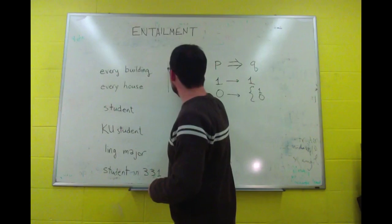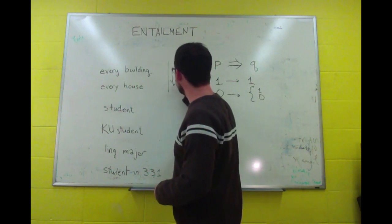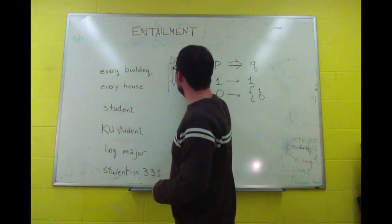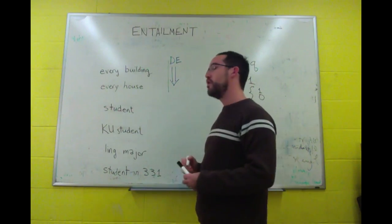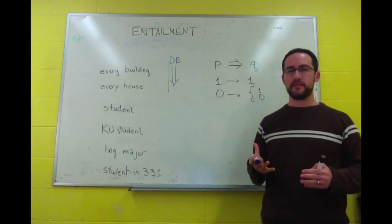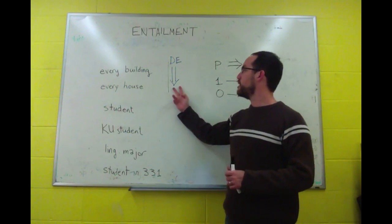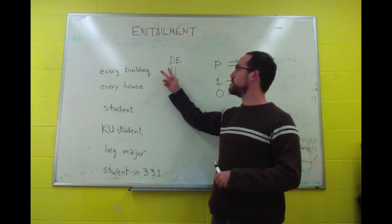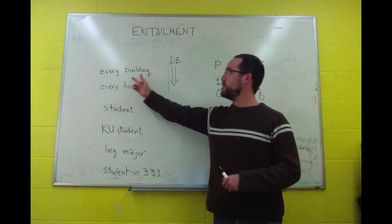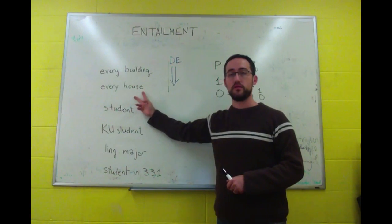We talk about downward entailment, or DE, when a phrase entails one of its kinds. So every building entails every house.